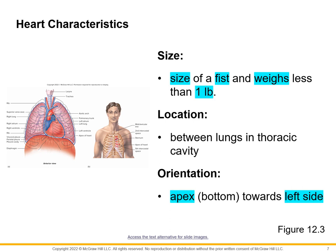The heart is located between our two lungs, right in the middle. However, the apex — the slightly pointed part at the bottom — is leaning toward the left side. The entire heart is not on the left side; it is truly in the middle, but a great portion of it faces the left. This is why we usually detect the heartbeat on the left side and not on the right.